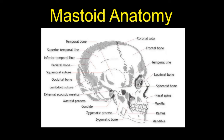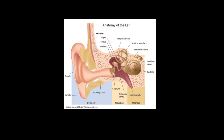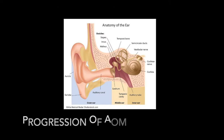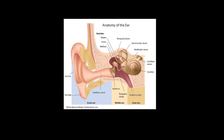The mastoid is part of the petrous temporal bone and it's located posterior, behind the middle ear. It's made up of cells that drain the middle ear, and you can feel your own mastoid process by placing your index finger directly behind the ear where you'll feel a hard bit of raised bone. Mastoiditis is associated with the progression of acute otitis media, with infection spreading from the middle ear into the mastoid air cell system.